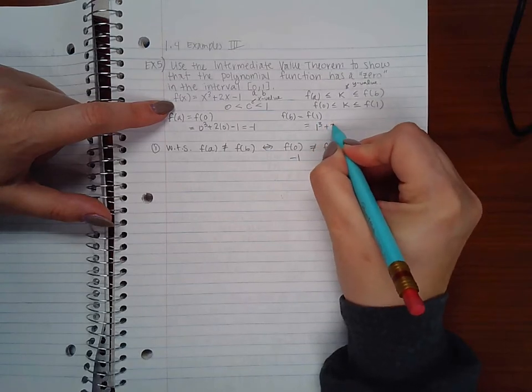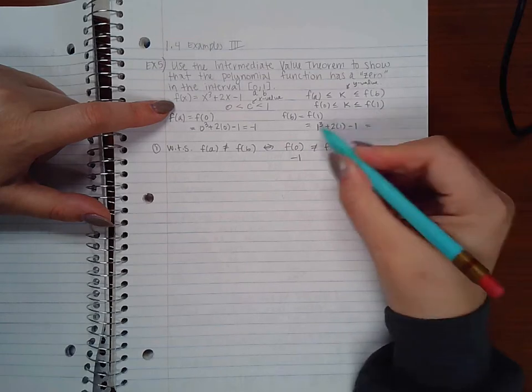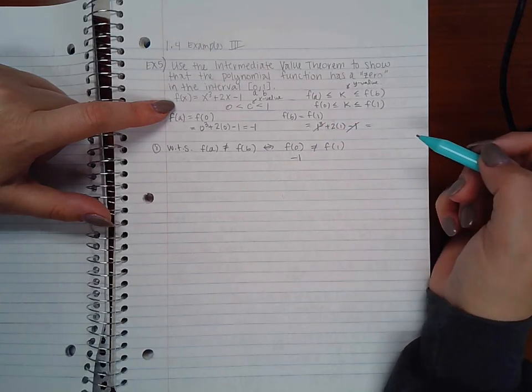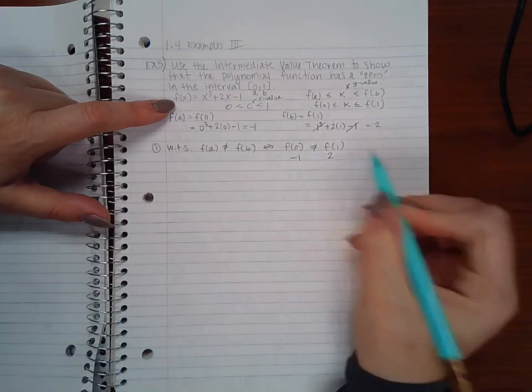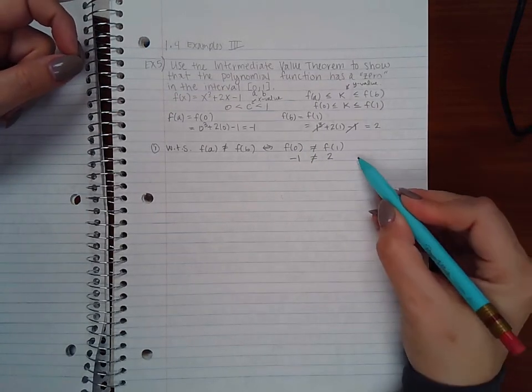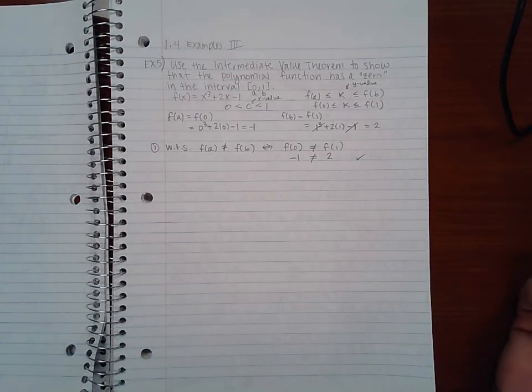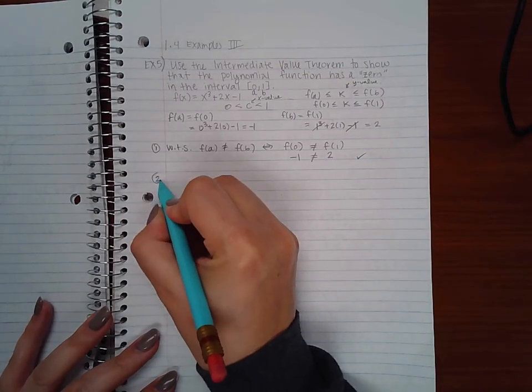Then if I want to find f(1), I would be plugging in 1 for all of my x's in my function. So 1 cubed plus 2 times 1 minus 1, and here this 1 and the negative 1 would cancel and I'd be left with just 2. So I get 2 for f(1), and these two are in fact not equal, so I have satisfied the first part of the Intermediate Value Theorem.